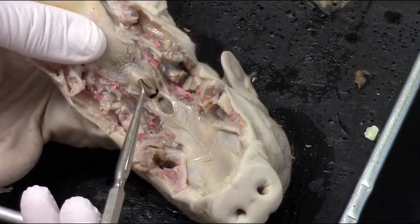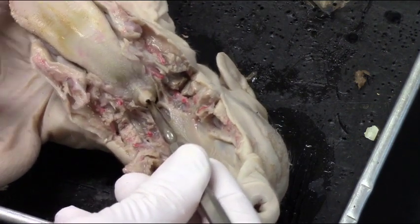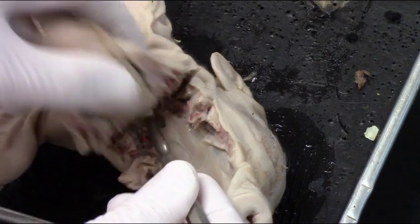The epiglottis, that little flap, is just on top of the glottis. That's the hole that my probe is in. The glottis leads to the trachea and the chest cavity.